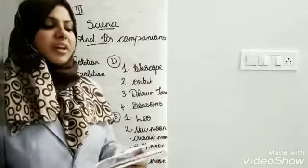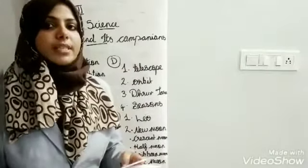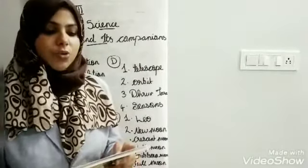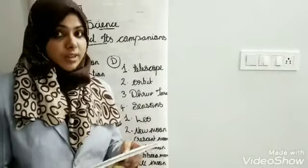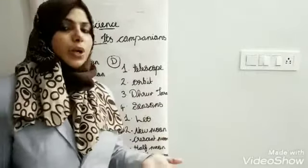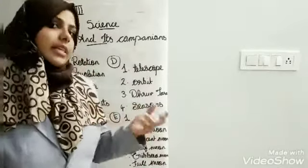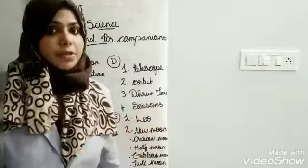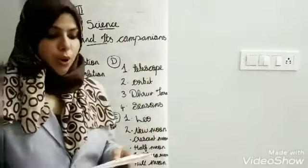Section E: very short answer questions. First question: name one constellation. There are many constellations such as Scorpius, Leo, Orion. There are a total of around 88 constellations. The answer here is Leo.